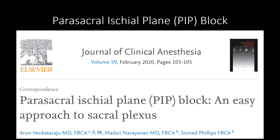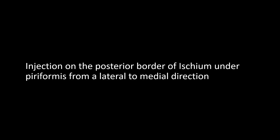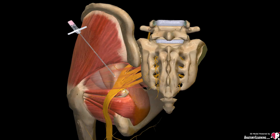We describe an easy fascial plane approach to block the sacral plexus, which we call the parasacral ischial plane block. In our approach, the injection is done on the posterior border of the ischium, underneath the piriformis muscle, from a lateral to medial direction. As depicted in this picture, the injection spreads medially to involve all the branches of the sacral plexus.